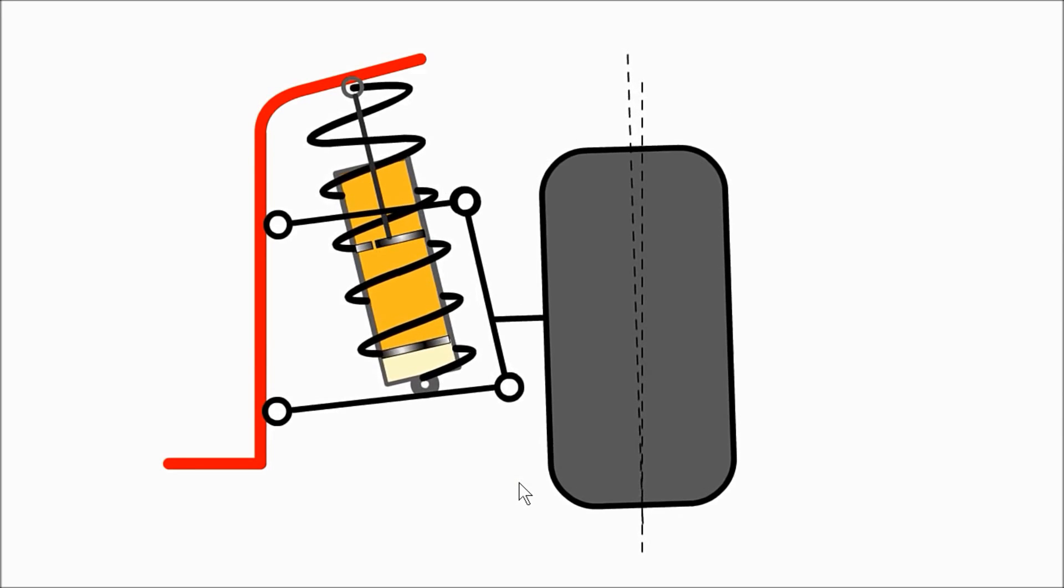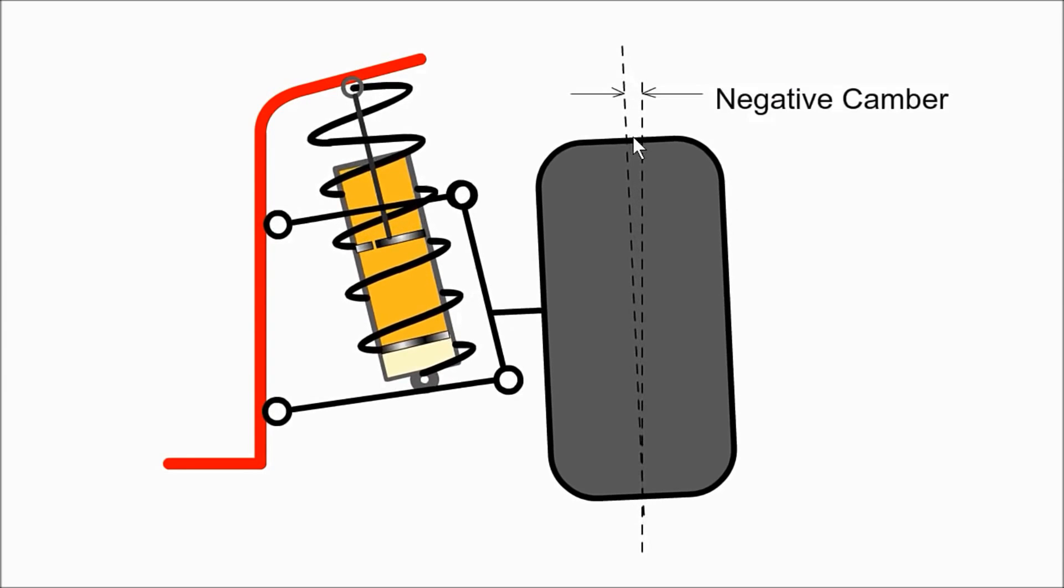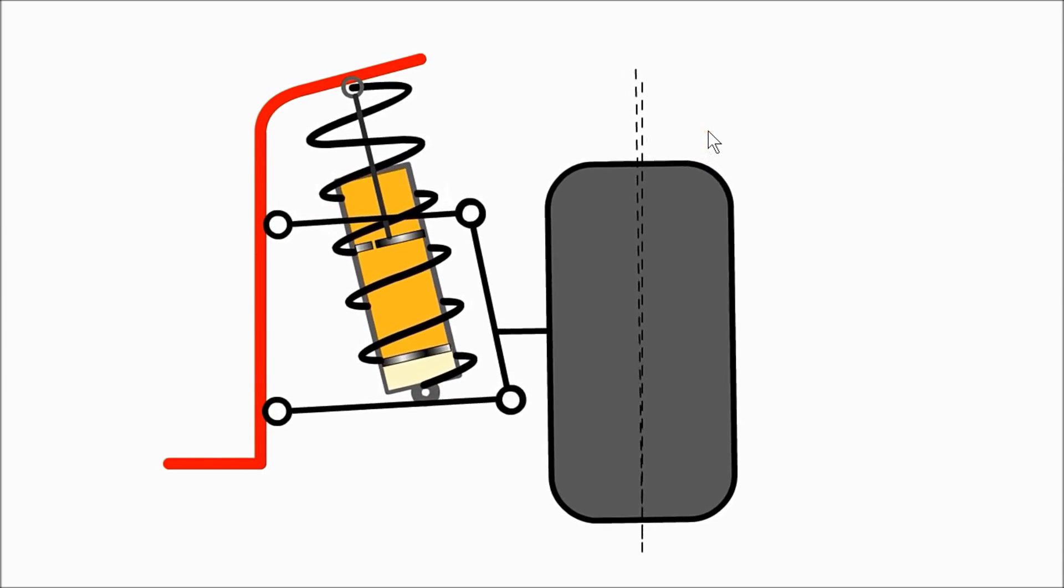The wishbones can be designed to alter the camber of the wheel as the suspension is deflected. Negative camber provides better stability as the car corners.